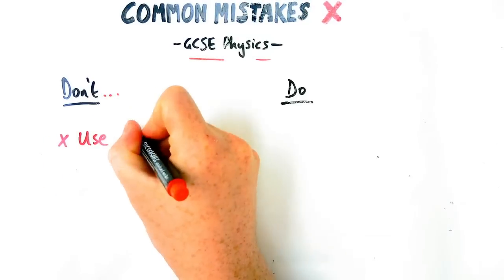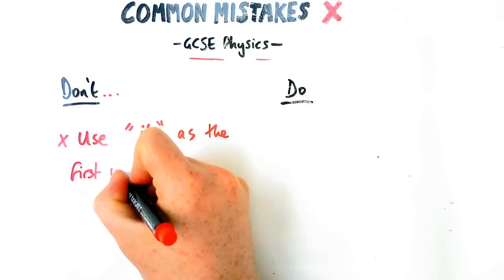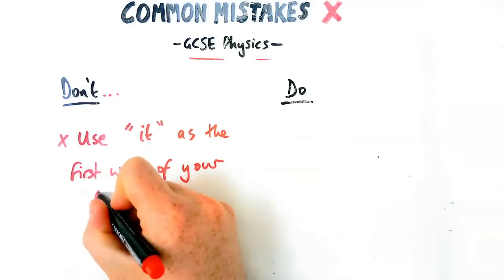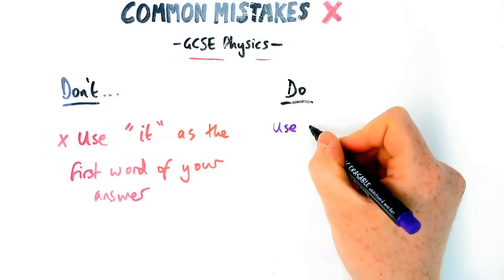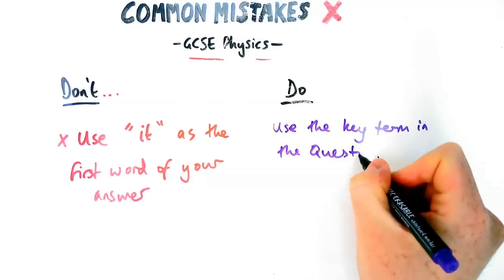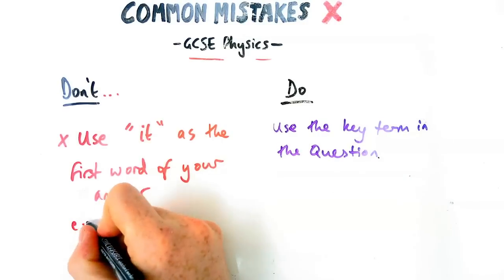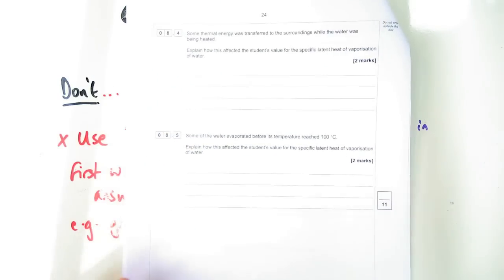Next thing we're going to talk about is don't use the word it as the first word of an answer, unless it's a very, very obvious what the question is asking. Now I'll give you an example in a second, but the idea is if you have a question about something, make sure you use the actual key term in the answer because the question could be talking about two or three different things.